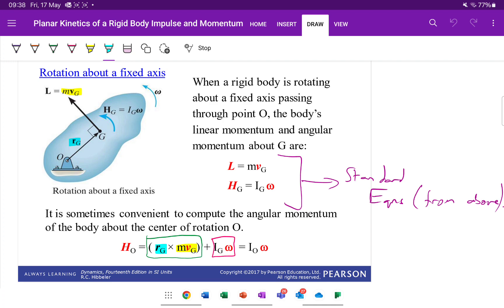So the angular momentum about point O is made up of two parts, the inertia times omega, so the angular momentum about G, and the effect, the turning effect that the linear momentum has. So the turning effect the linear momentum has are captured in that green box, that's that part of the equation.